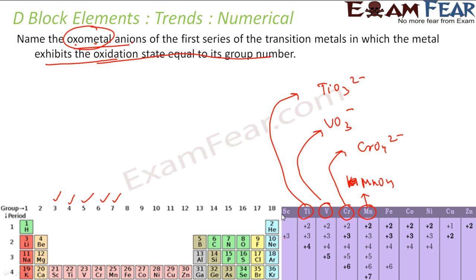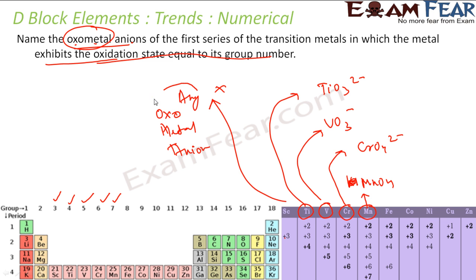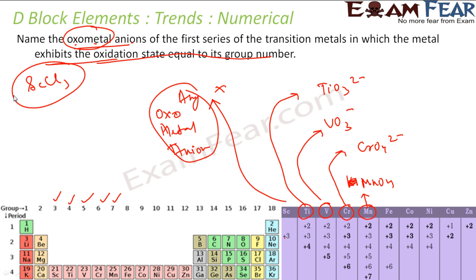For scandium, the group number and oxidation state match, but scandium does not have any oxo metal anion. So scandium will not be part of the list. Though scandium has an oxidation state equal to its group number, there is no oxo metal anion formed by scandium — it typically reacts with chlorine or forms hydroxides but not oxo metal anions.